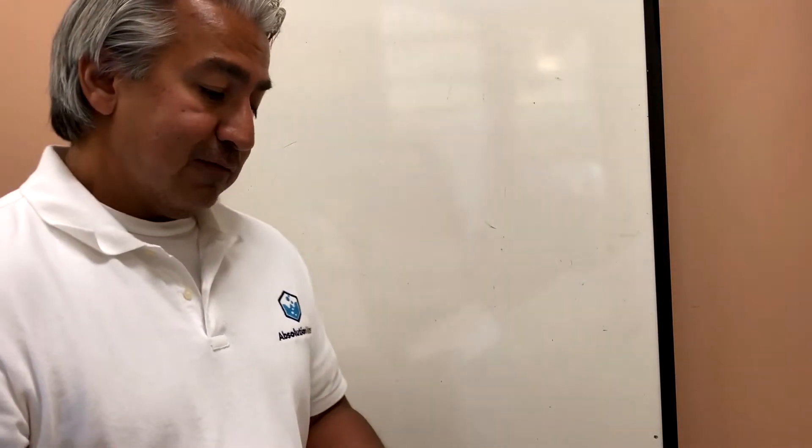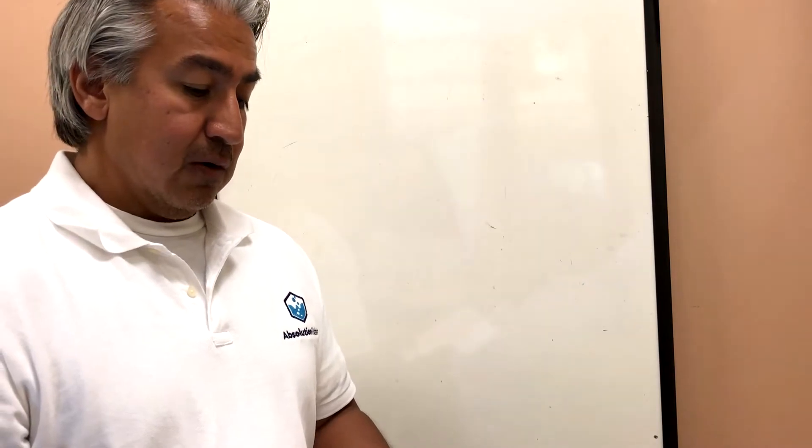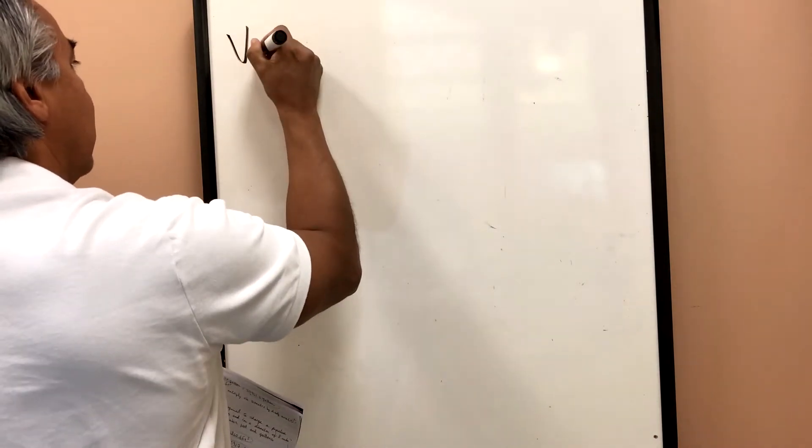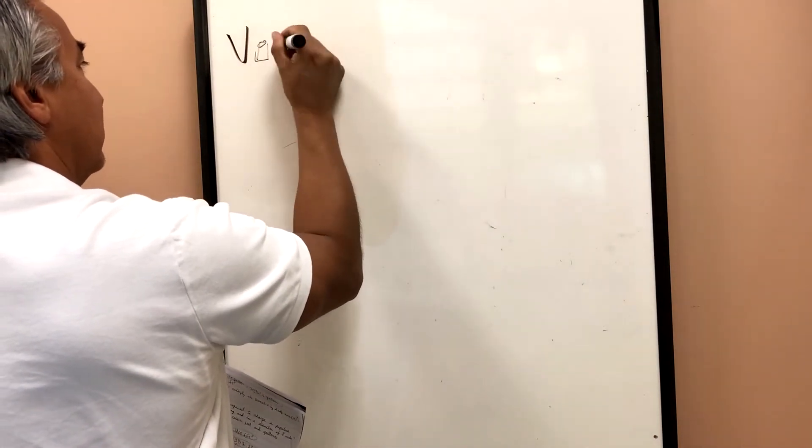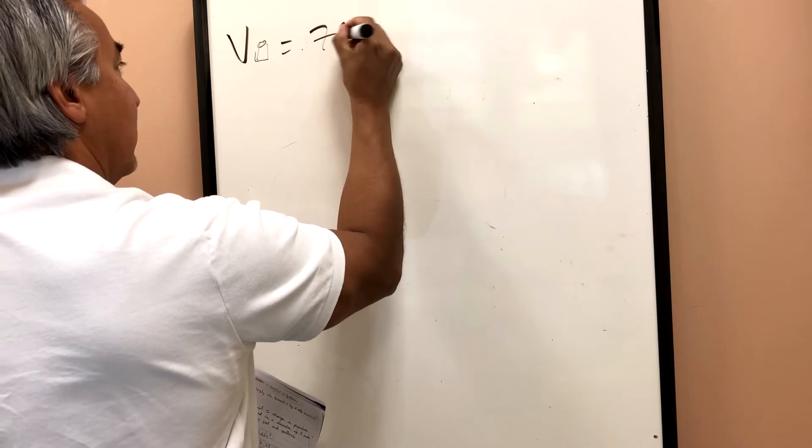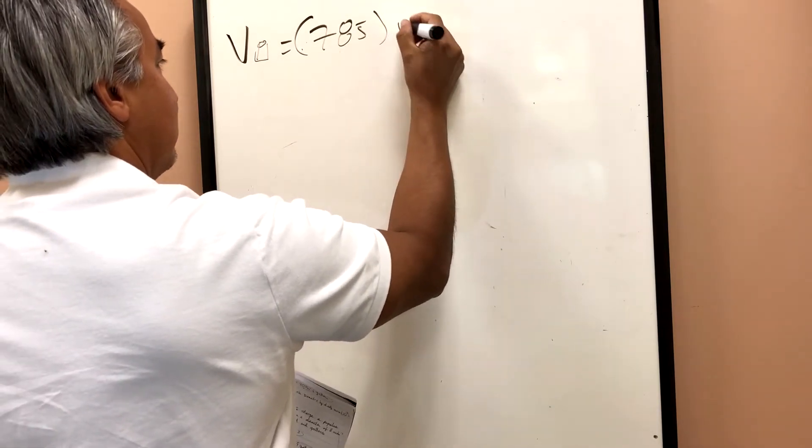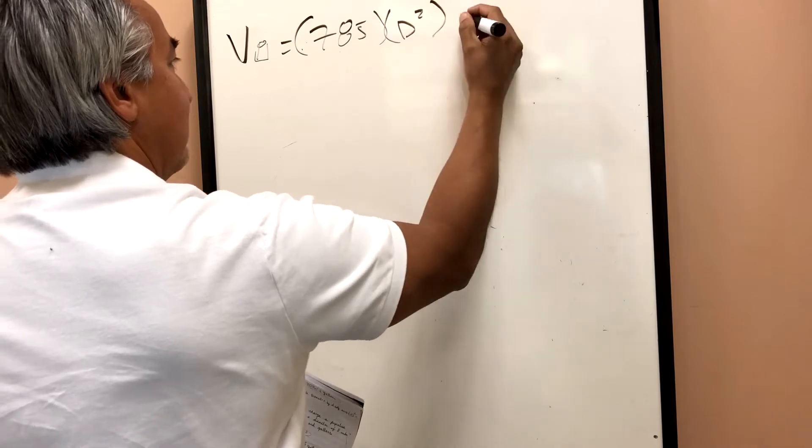So this one here is pretty straightforward. They're not always straightforward. We need to find out what the volume of a cylinder is because that's what a pipe is. So the volume of a cylinder is 0.785 times the diameter squared times the height or the length.